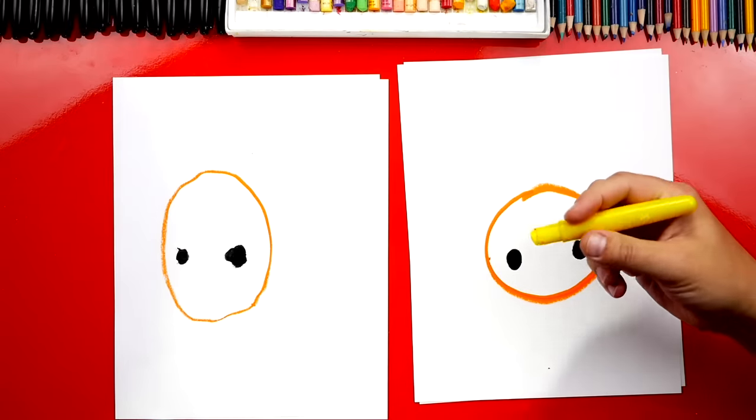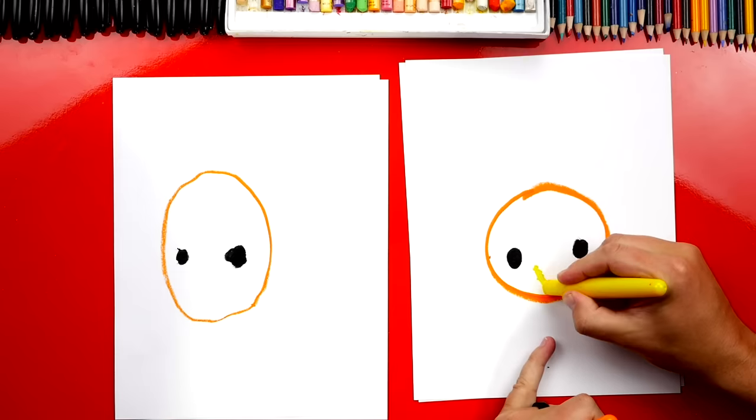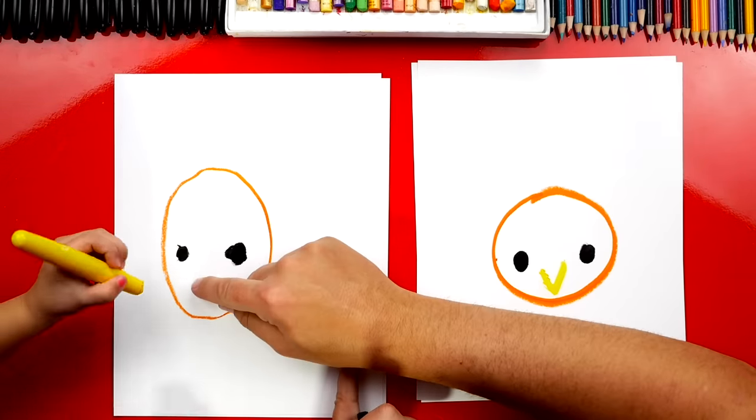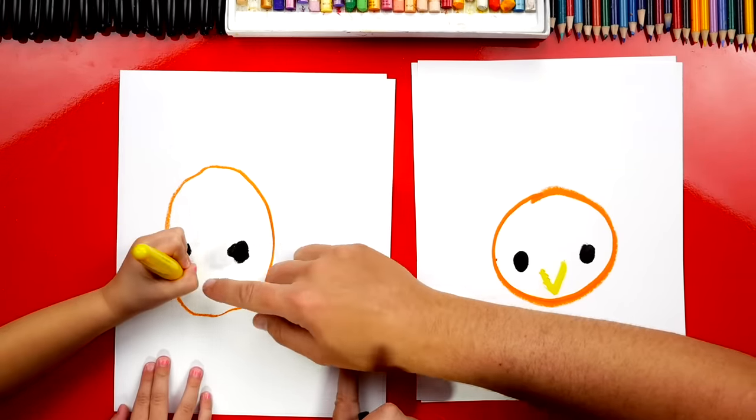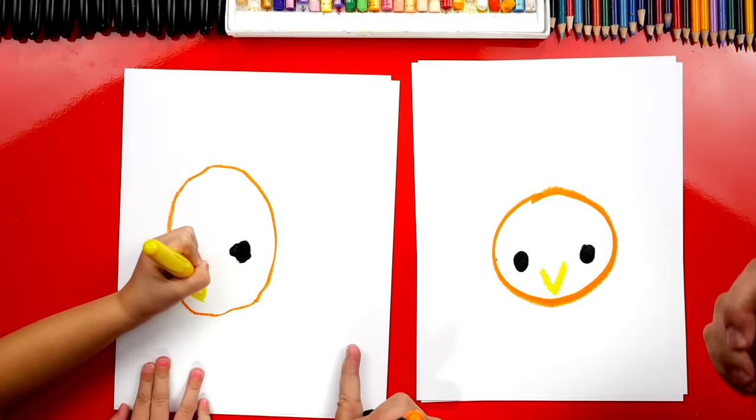Now we're going to draw a triangle for the beak. We're going to draw a V. We're going to go down and up. Do you want to draw a V? The letter V. Go down and up. Go down and up. Oh, you did it.